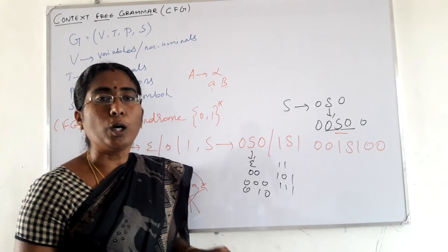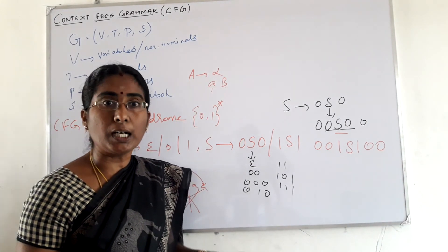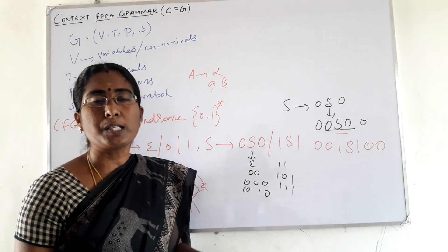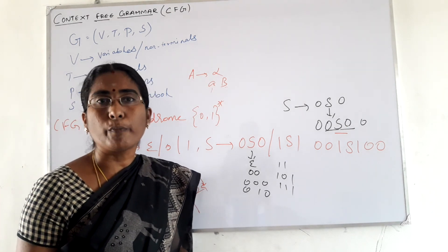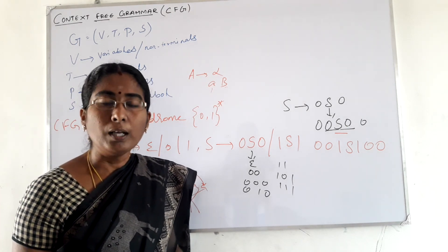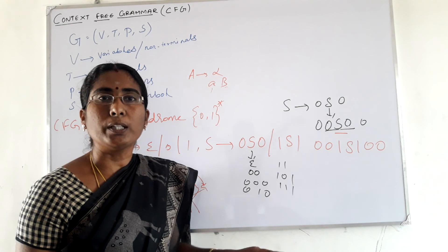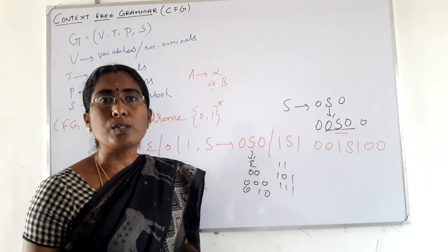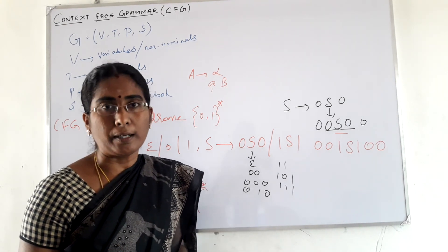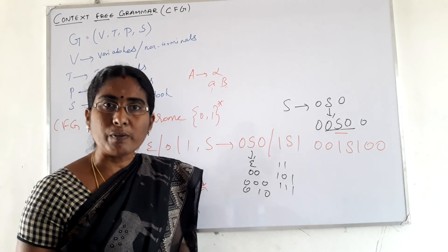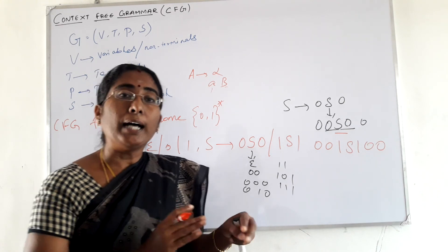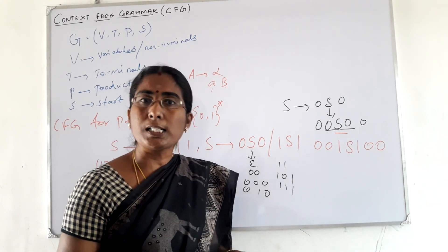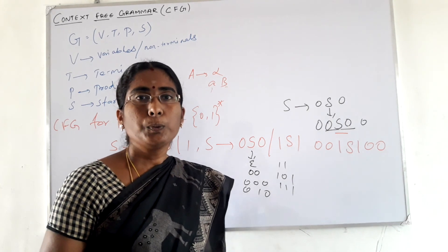We must always write productions in a recursive way — we should not write specific productions for each and every input symbol. Specific productions are only for the basic condition where |w| ≤ 1. Other than that, we write productions recursively. Thank you.